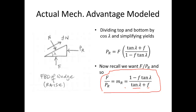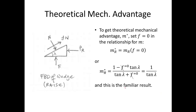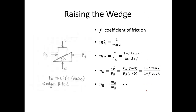That gives us our mechanical advantage to raise the load, expressed in terms of the coefficient of friction and the tangent of lambda. To get the theoretical mechanical advantage, we simply set friction equal to zero, giving the familiar result: 1 divided by tan λ. In summary for raising: the theoretical mechanical advantage M*_r equals 1/tan λ, and the actual mechanical advantage is (1 − f·tan λ) / (tan λ + f).